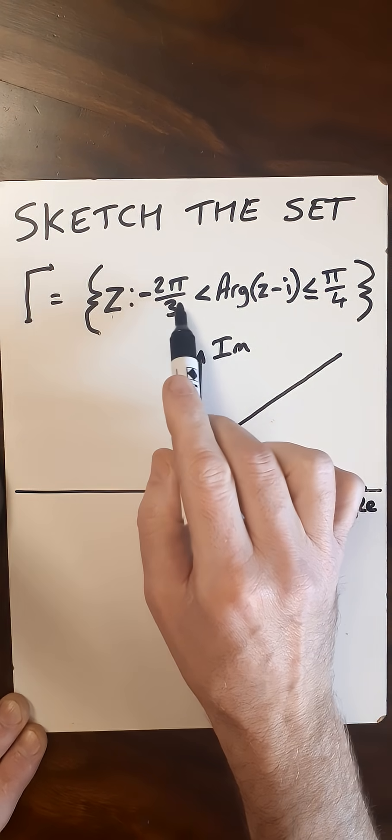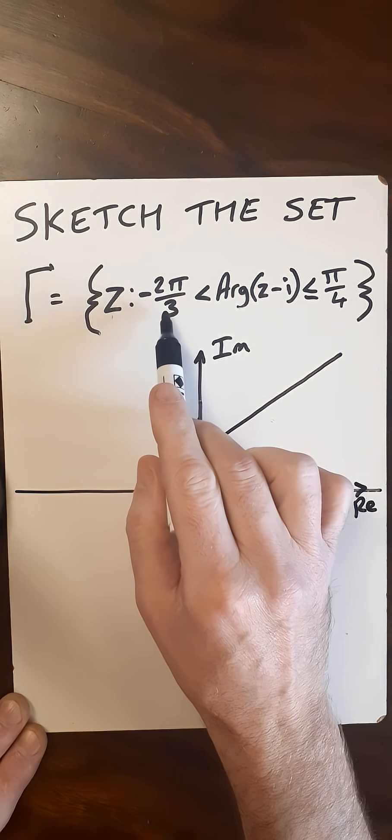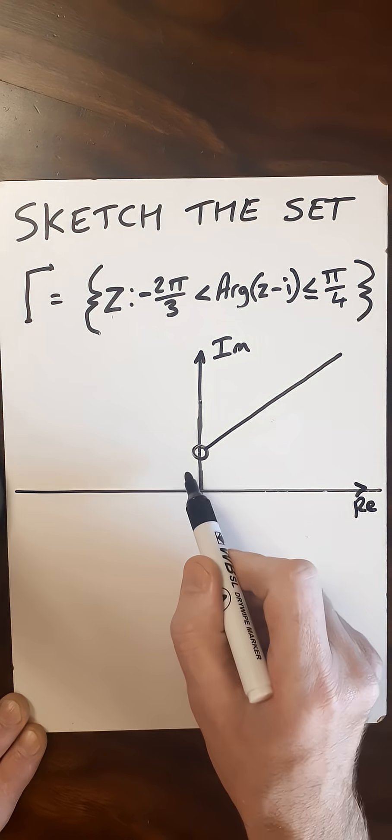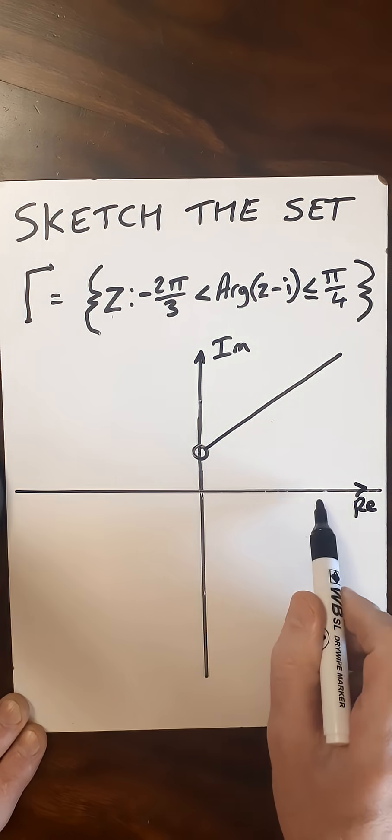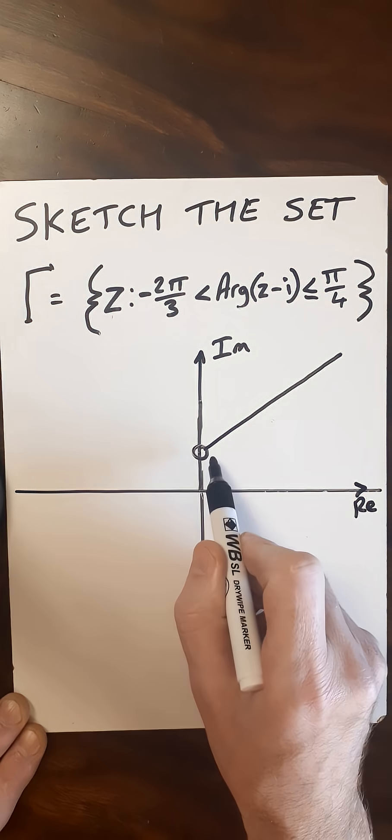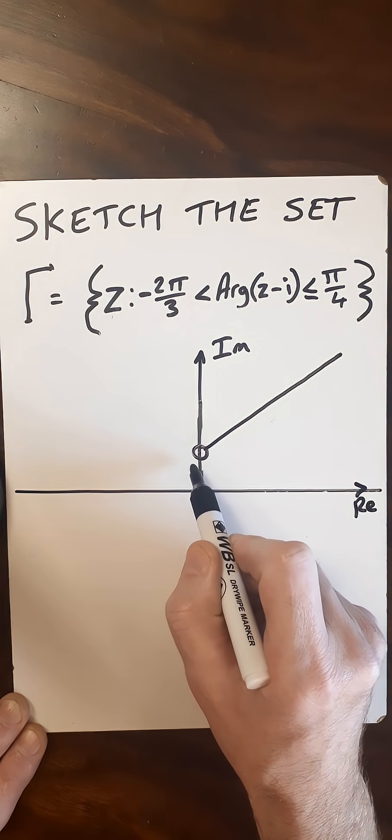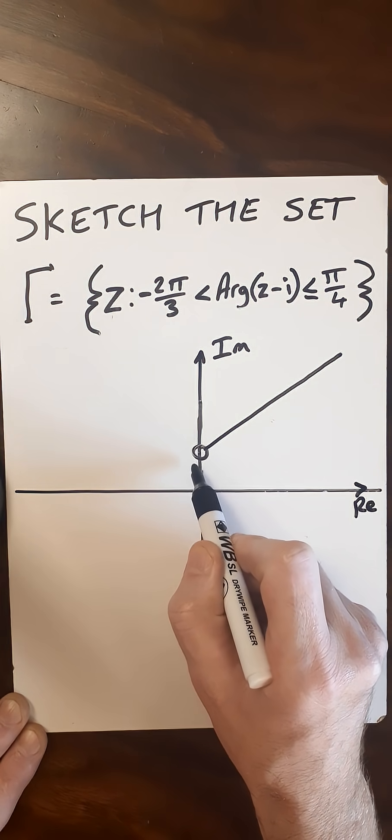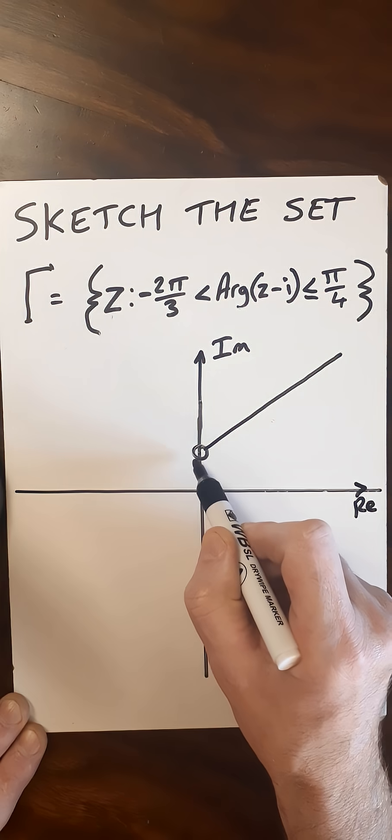And here we've got less than, but not equal to, minus 2 pi over 3. So we need to make an angle of minus 2 pi over 3 parallel to the real axis. So if we go anti-clockwise, minus 2 pi over 3, that's going to be in this direction.